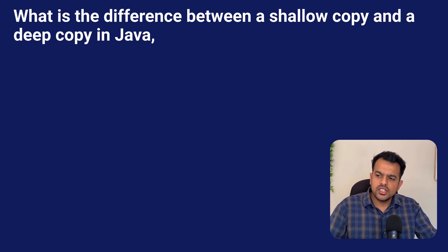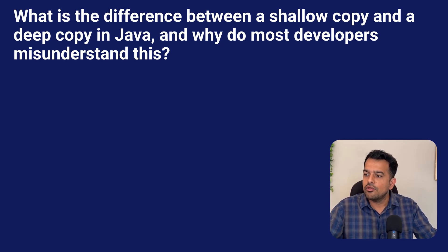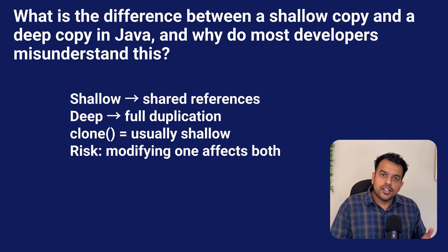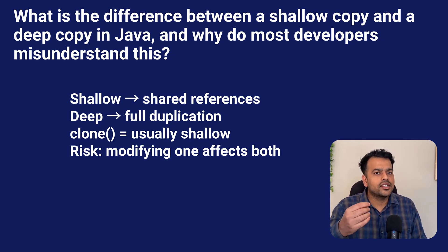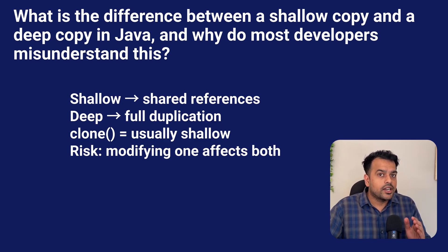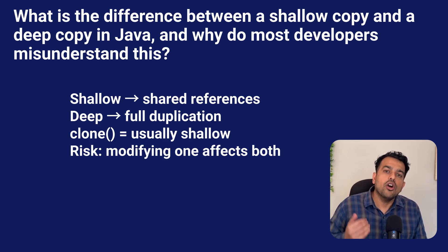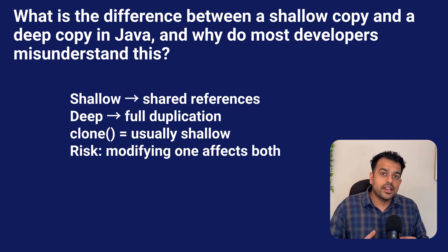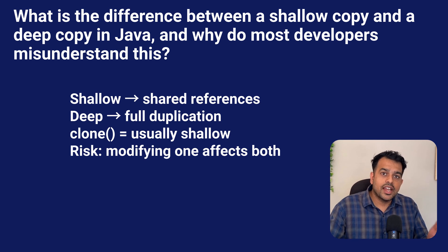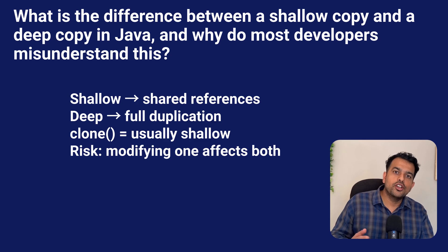The next question is: what is the difference between a shallow copy and a deep copy in Java, and why do most developers misunderstand this? A shallow copy only copies the outer object, but inner nested objects still point to the same memory — both copies share the same referenced objects. If you modify something inside the nested object, both copies reflect the change. A deep copy means you recreate the entire object graph — every nested object gets its own new instance. The tricky part is Java does not give you a deep copy automatically. The clone() method usually performs only a shallow copy unless you manually override it. This becomes a big issue when copying lists of custom objects — you think you copied it but you only copied the structure, not the content.